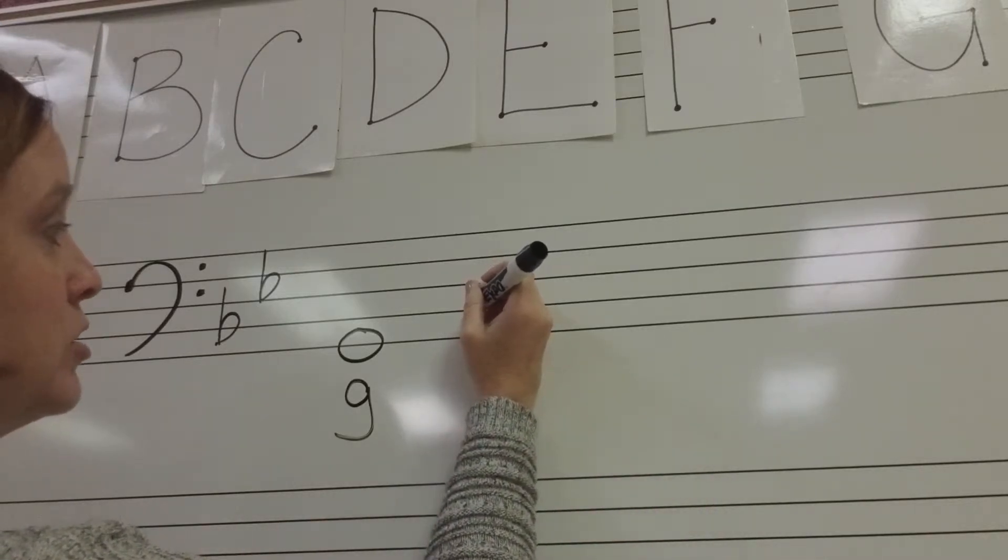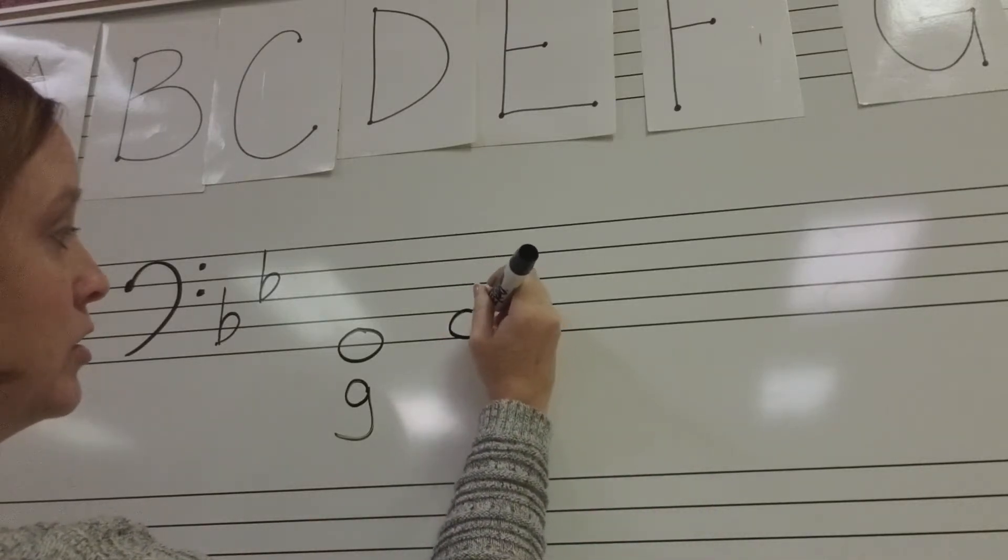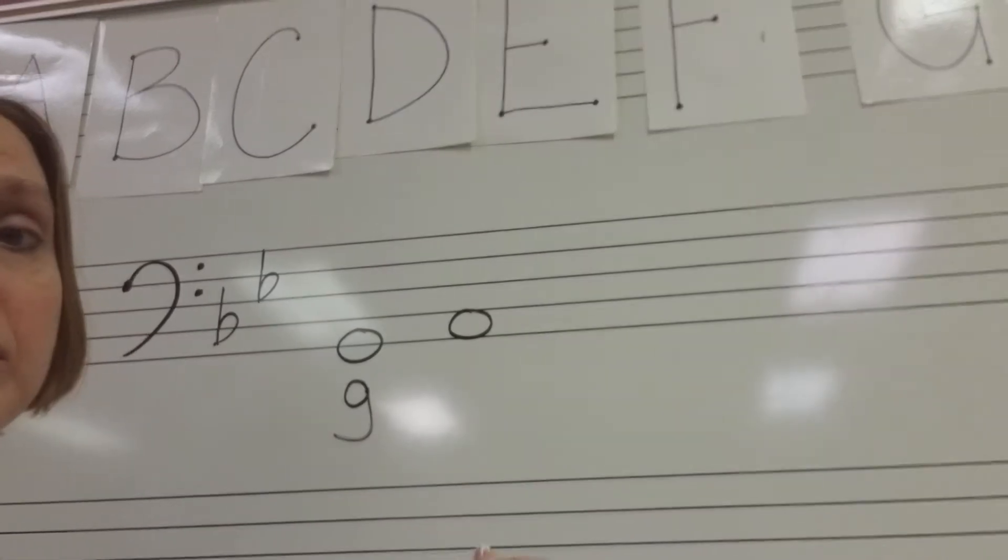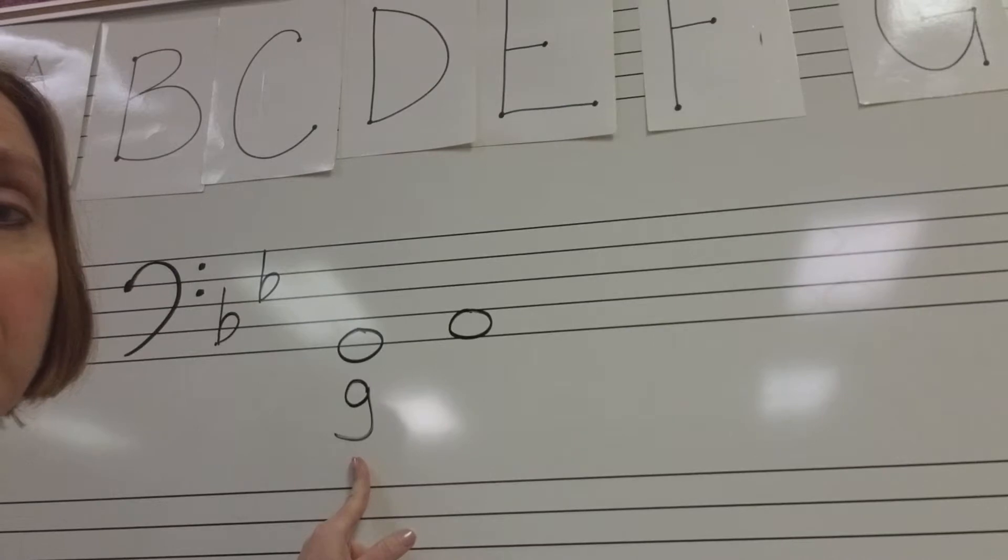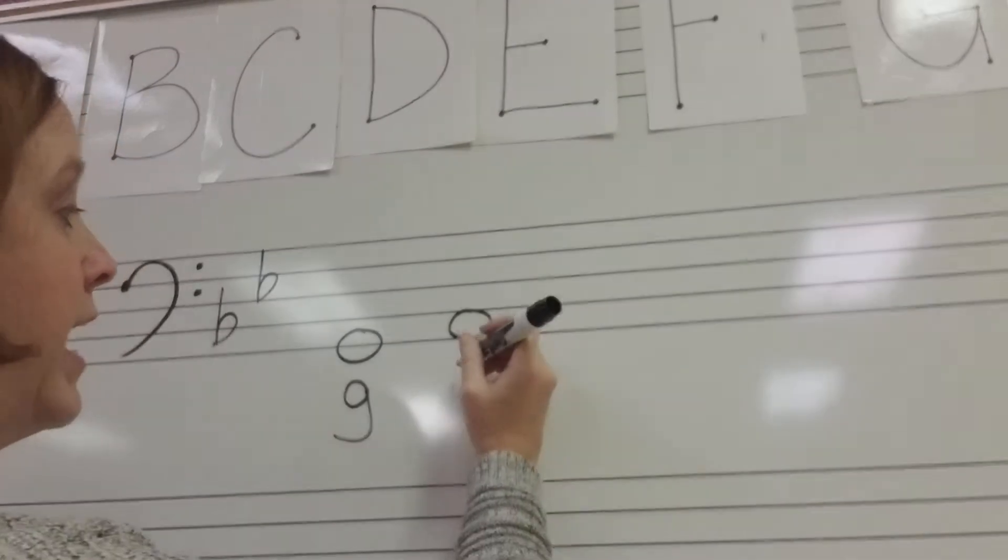Next, we are going to draw our note on the first space. And when we get to G in the musical alphabet, we have to start over. So we start over on A.